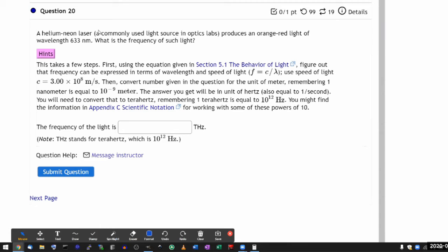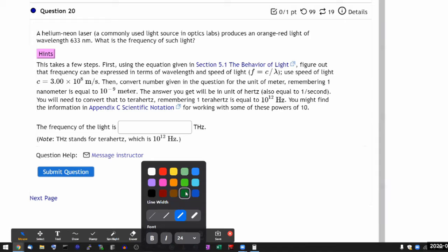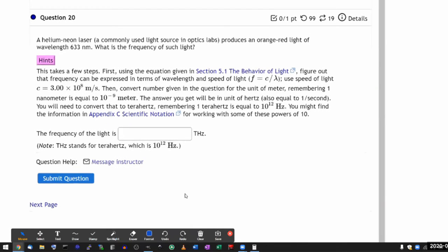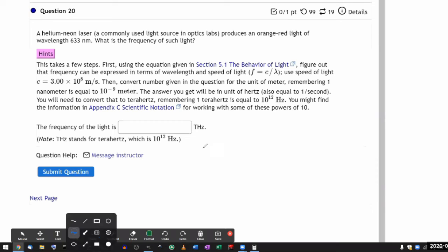So let me use that expression that's given there. With that, the frequency that I'm looking for is speed of light. So let me write that down first. Speed of light divided by wavelength. So let me write down this speed of light in scientific notation. In scientific notation, it's 3 times 10 to the 8 meters per second. And the wavelength,